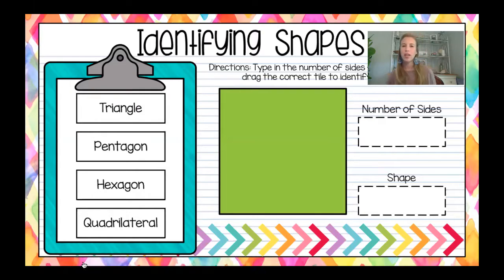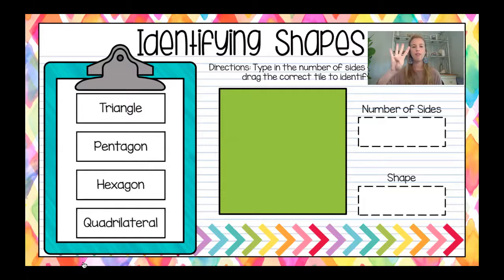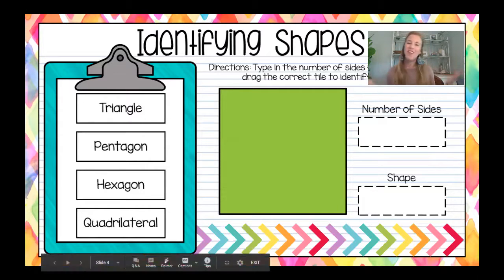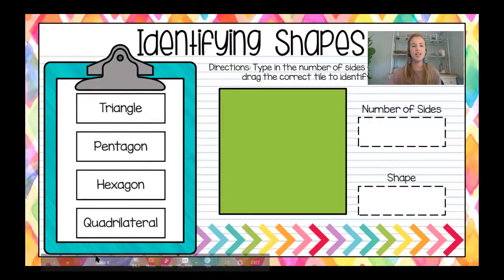The next one you're also familiar with. Count those sides and name that shape. Let's count together: one, two, three, and four — there are four sides. When we have a four-sided figure, we have a quadrilateral. Quad is the prefix and quad means four. What is this quadrilateral specifically? It is a square.